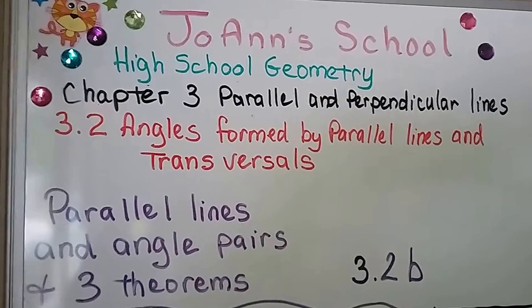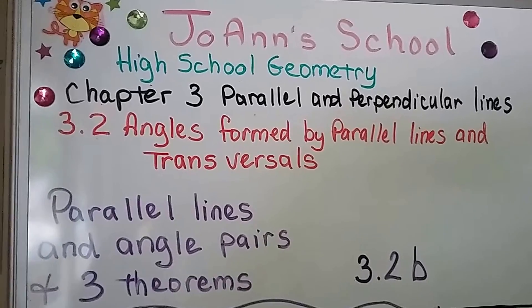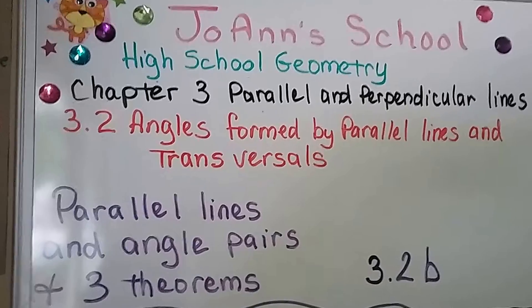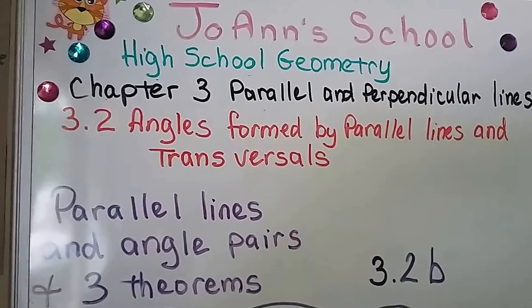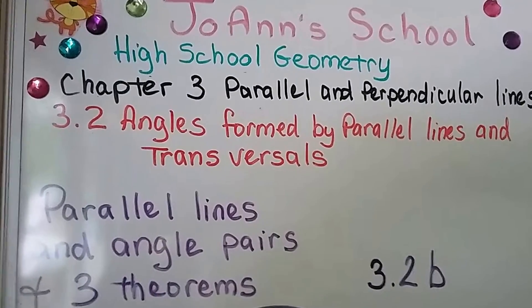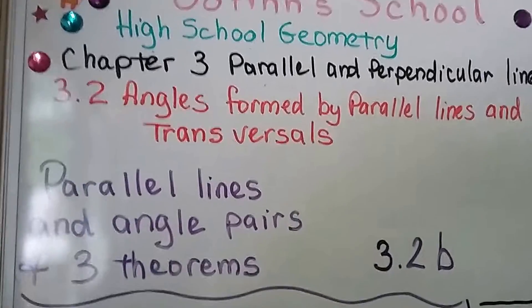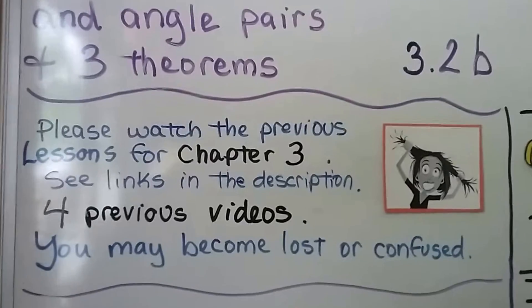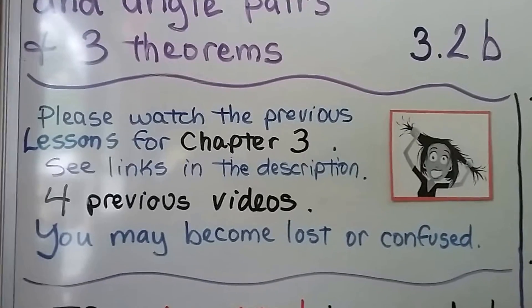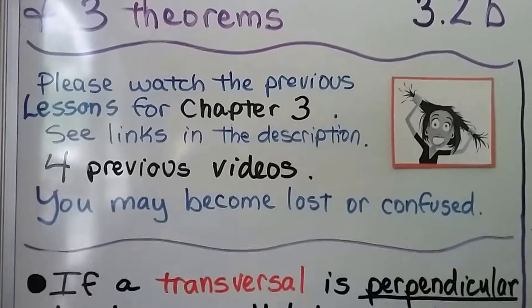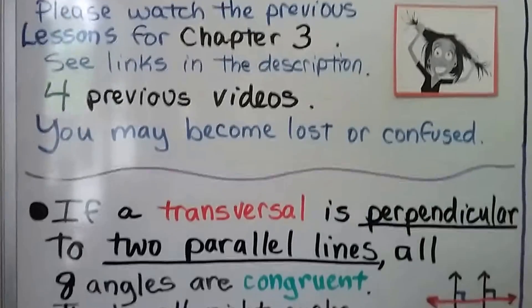We're still in lesson 3.2. We're going to talk about parallel lines and angle pairs and the three theorems I mentioned in the last video. We're at 3.2b. We have four previous videos for the chapter that are linked in the geometry playlist in the description.